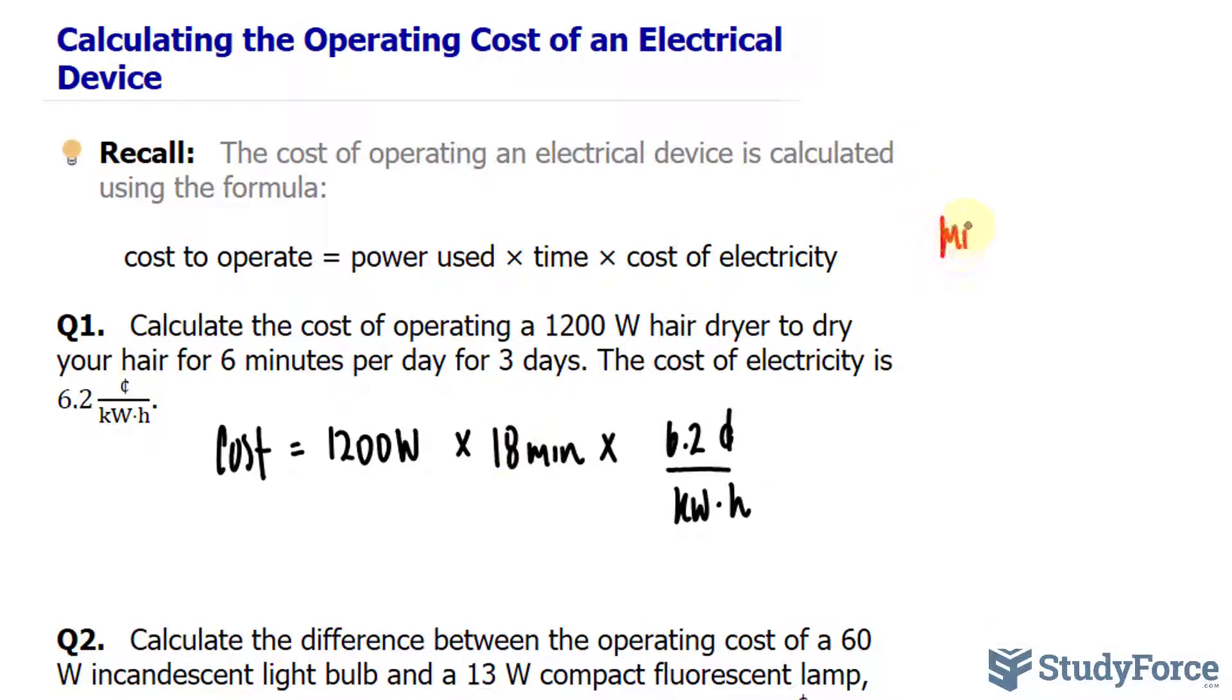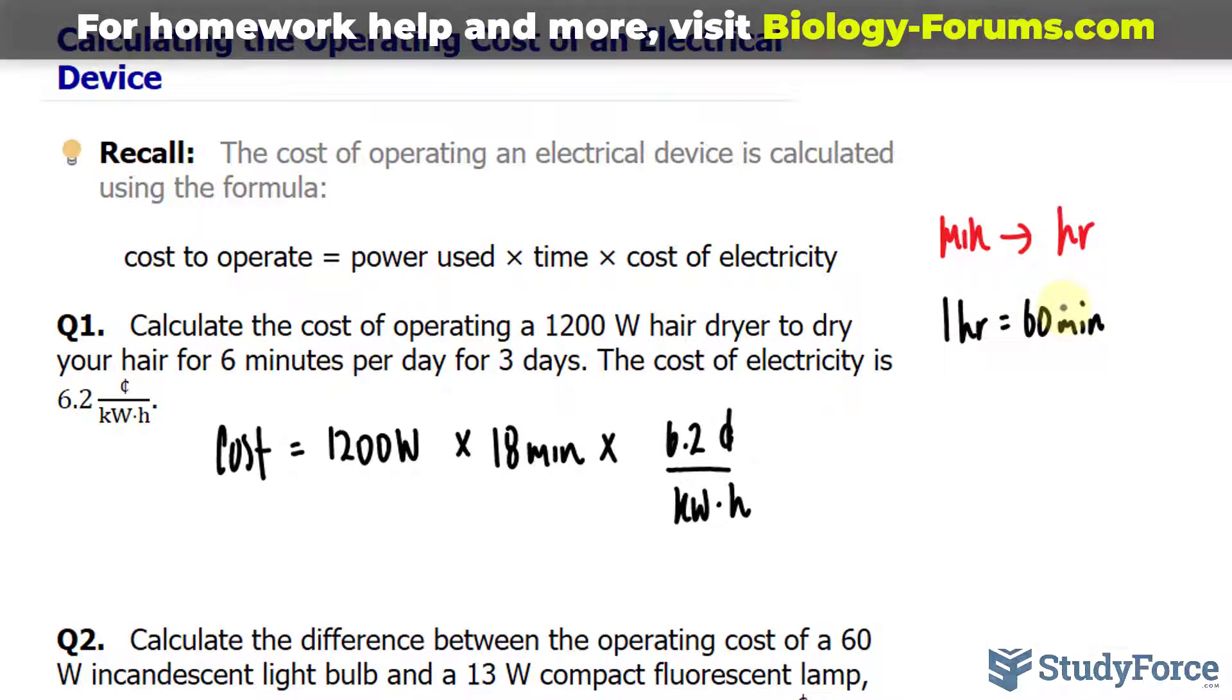To go from minutes to hours, remember that there are 60 minutes for every one hour. Let me quickly write that down for reference. So one hour consists of 60 minutes. Now this conversion can be written as a fraction.